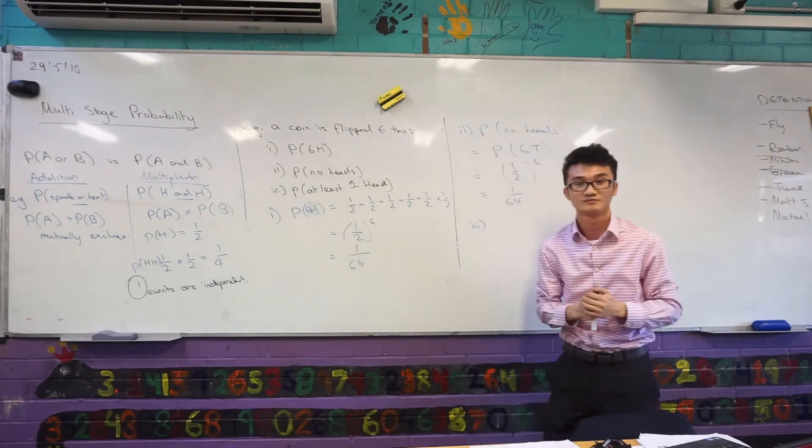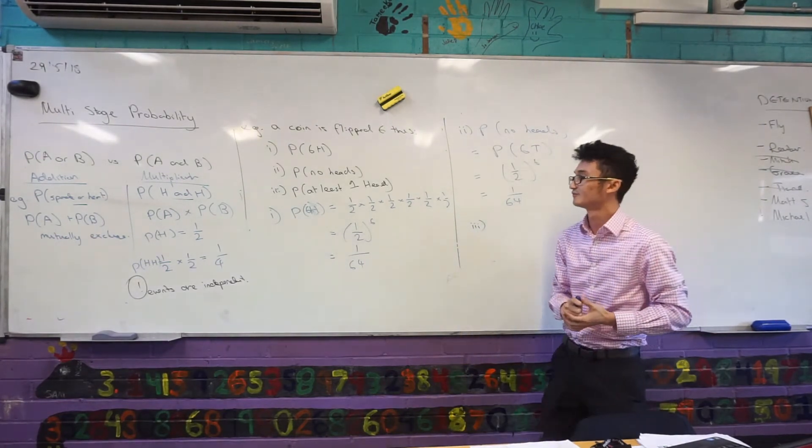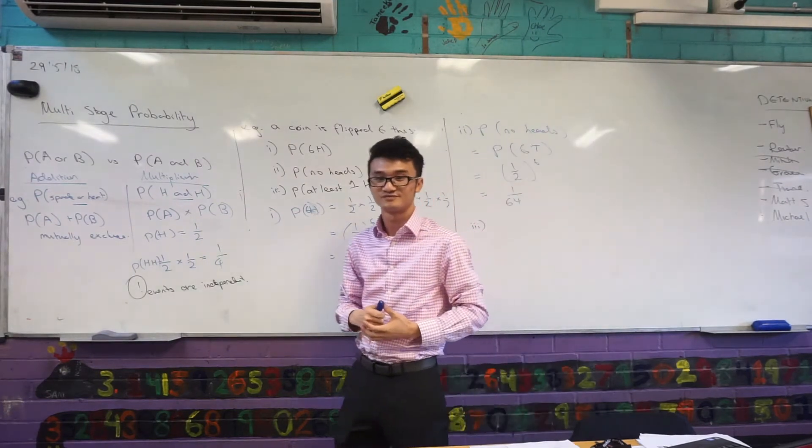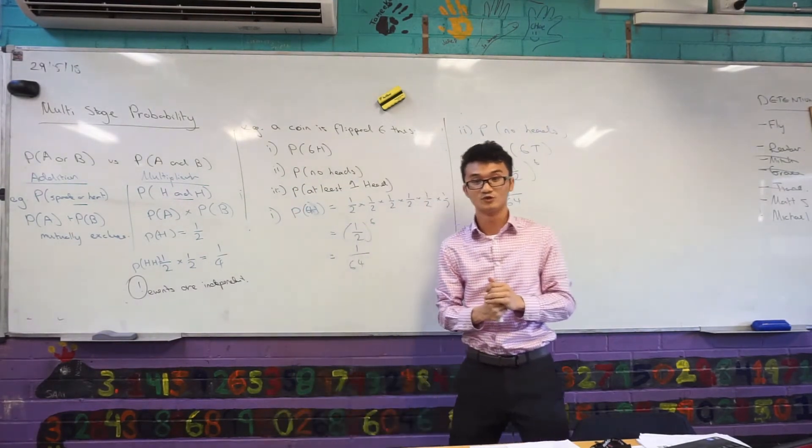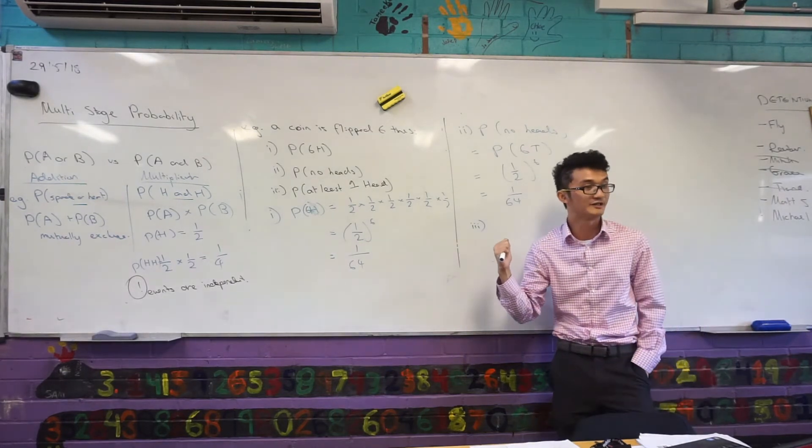At least one head. What happens if it says, like P, no spades, or no halves? We'll look at those examples later, okay? We can use the same idea. But we'll look at those examples later. Let me keep going.